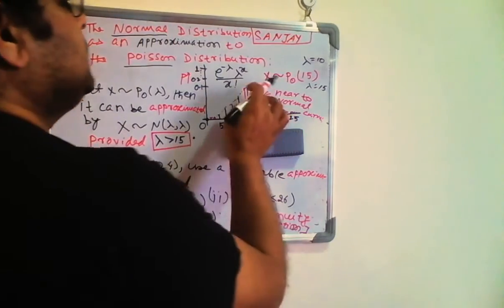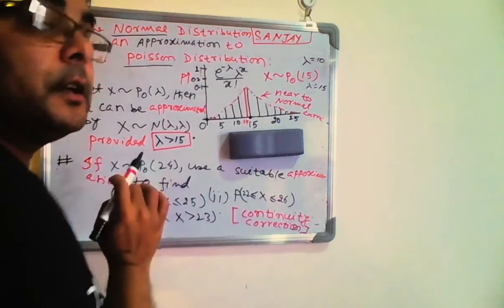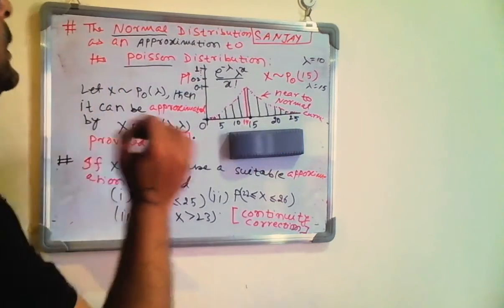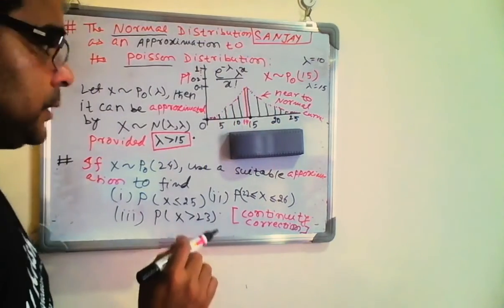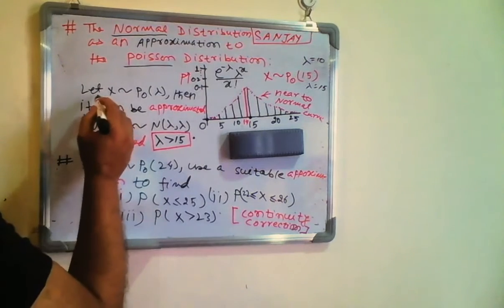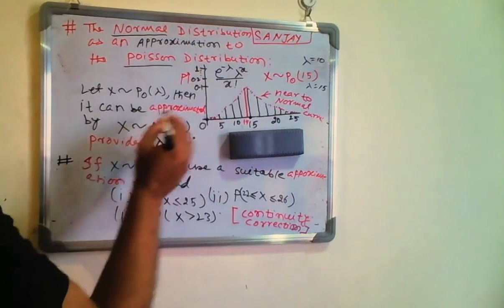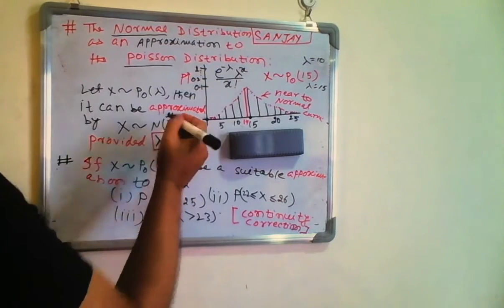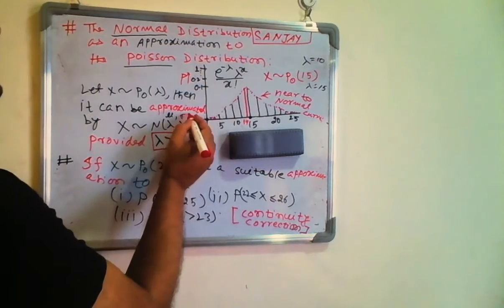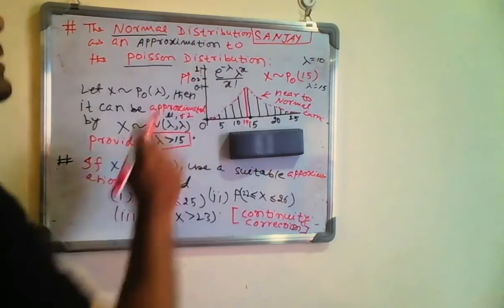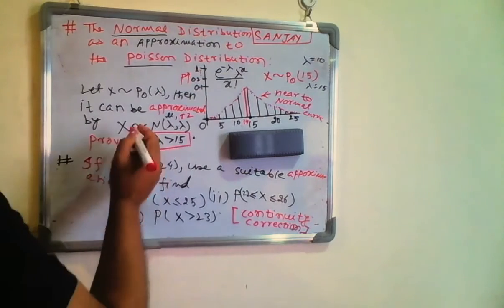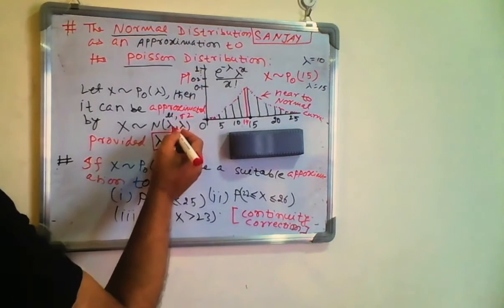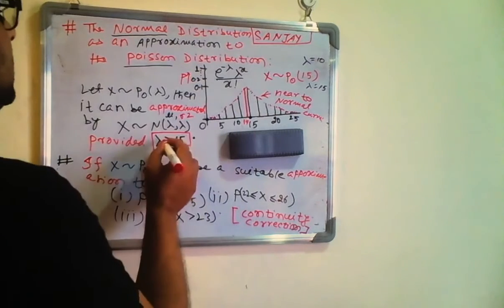Since for the Poisson distribution the mean is lambda and the variance is also lambda, the approximating normal distribution has mu equals lambda and sigma squared equals lambda. The condition for this approximation is: if lambda is greater than 15, then X following Poisson(lambda) can be approximated by X following Normal(mu = lambda, sigma squared = lambda).